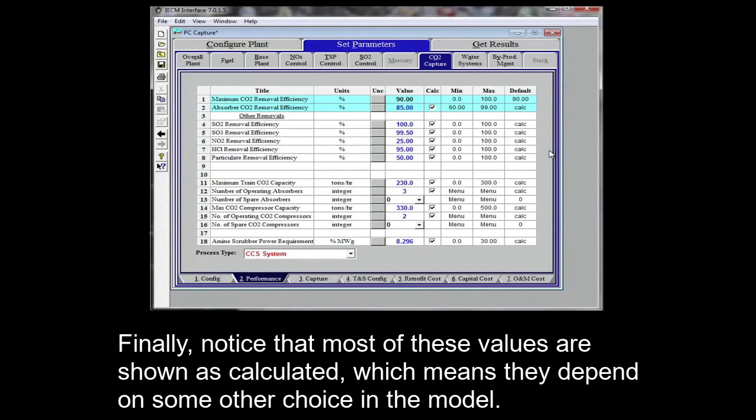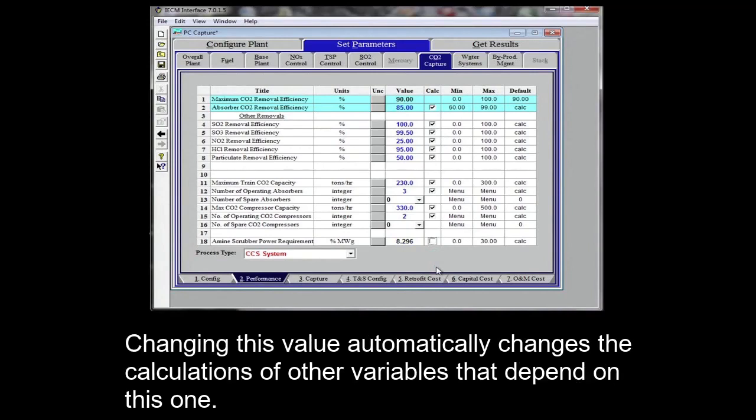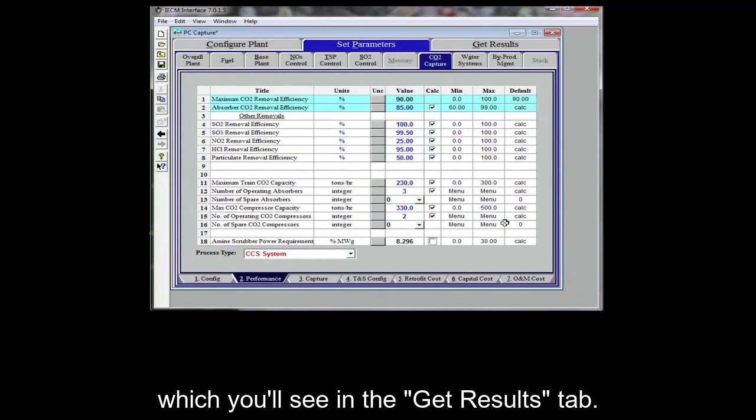Finally, notice that most of these values are shown as calculated, which means they depend on some other choice in the model. But you can override this value by unclicking the calculate box beside any input of interest, and type a new value manually. Changing this value automatically changes the calculations of other variables that depend on this one. It will also automatically change the calculations for any results that depend on this parameter value, which you'll see in the get results tab.